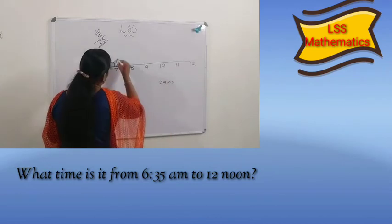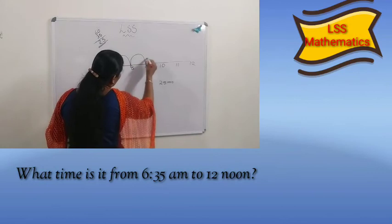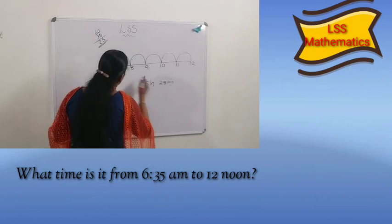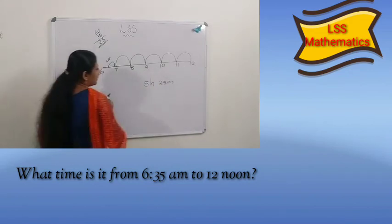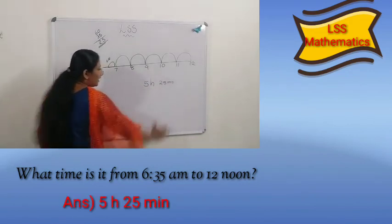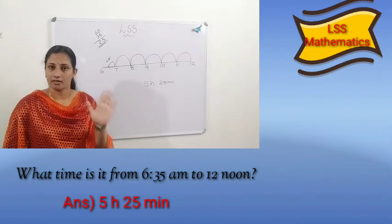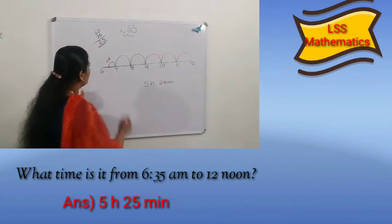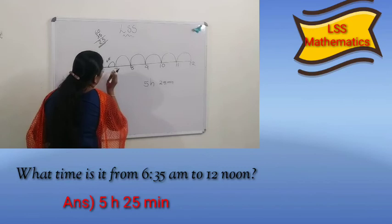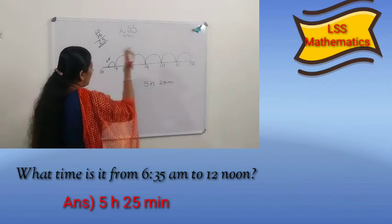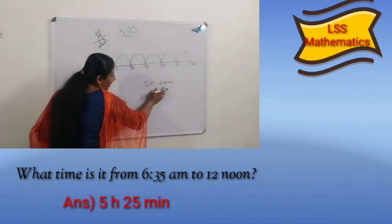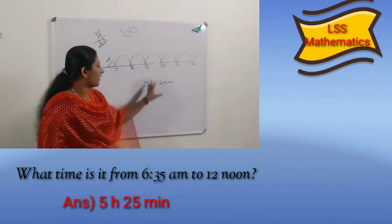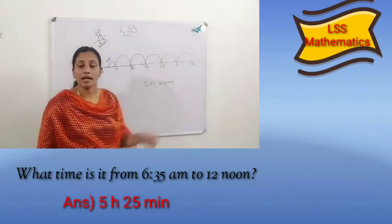Then how many hours are there? 1, 2, 3, 4, 5 — from 6:35 to 12 noon. That is 5 hours and 25 minutes. Once again: from 6:35, to reach 7 o'clock you need 25 minutes because 35 plus 25 is 60. Then 5 hours. So, the answer is 5 hours and 25 minutes.